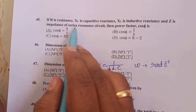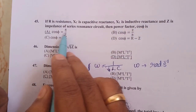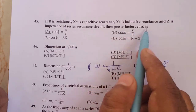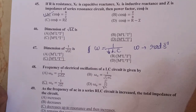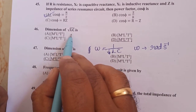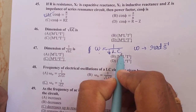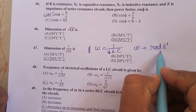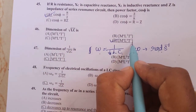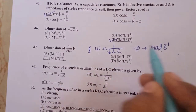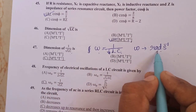If R is the resistance, Xc is the capacitive reactance, XL is the inductive reactance, and Z is the impedance of the series resonance circuit, then the power factor cos phi is equal to R divided by Z. Dimension of omega equals 1 divided by root of LC; omega is in radian per second, which has dimension M⁰L⁰T⁻¹ since radian has no unit.